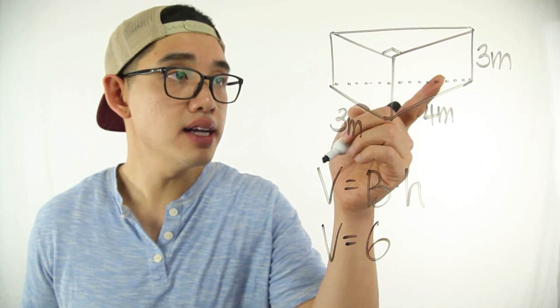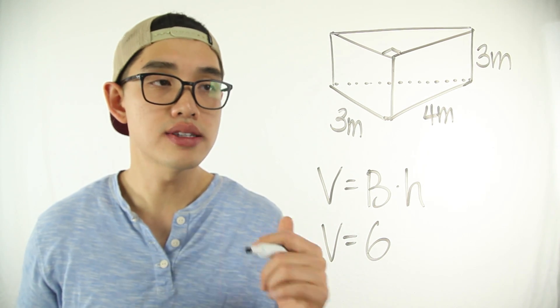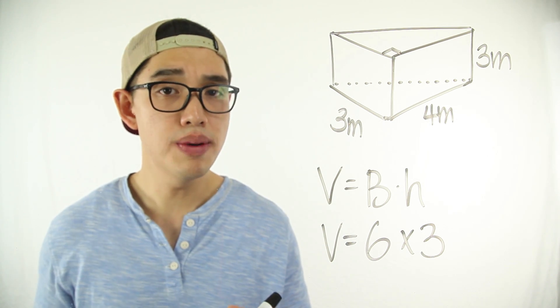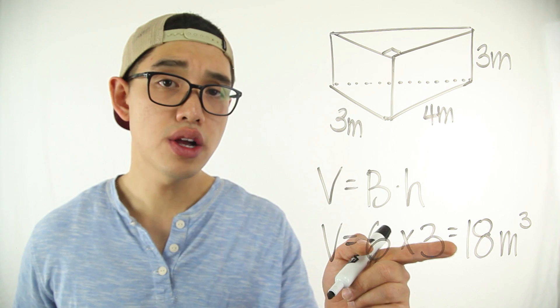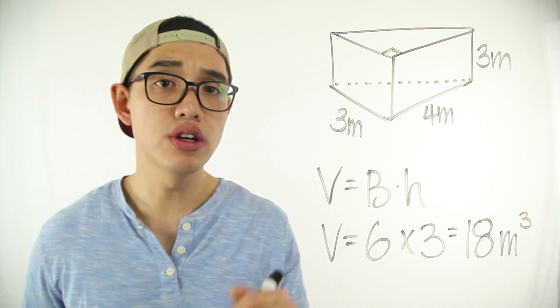We're then going to multiply it by the height, which is 3. So all 3 layers are going to be exactly the same as the base. And that's going to give us 18 cubic meters. This answer means that there are 18 cubic meters that can fit into this triangular prism.